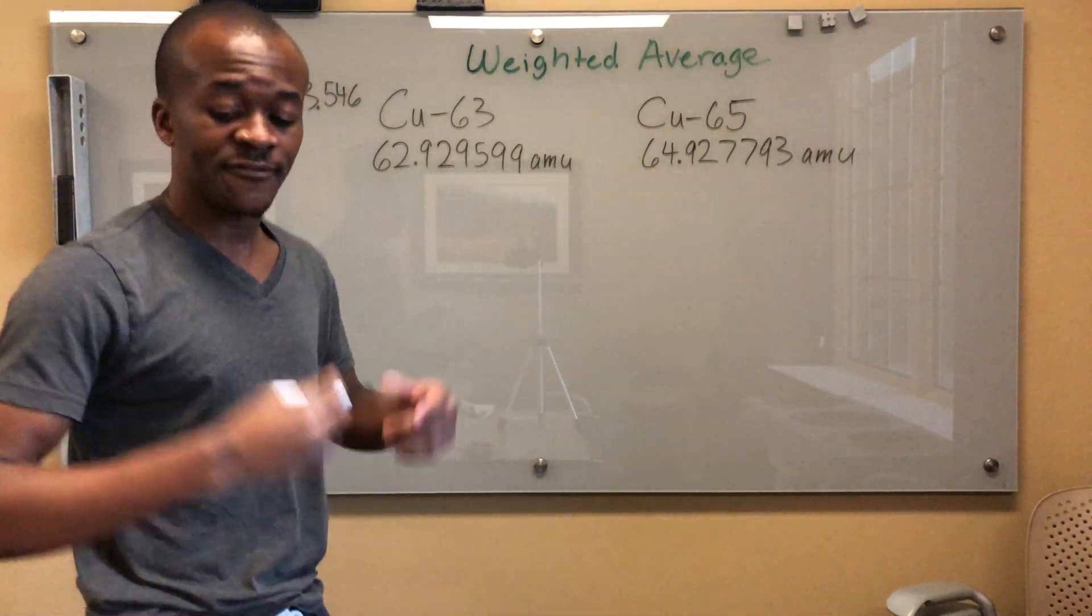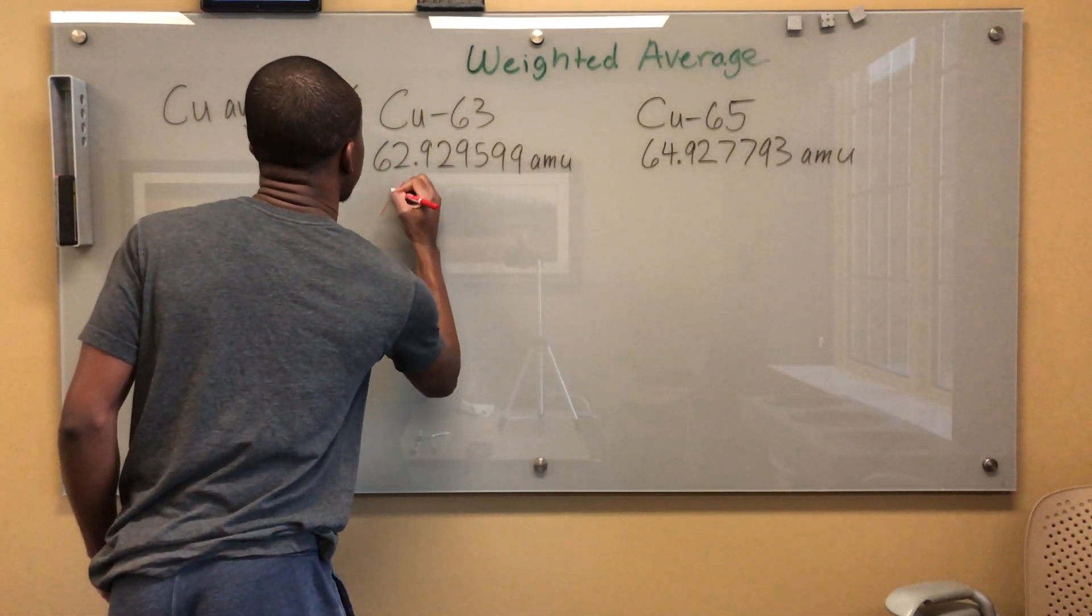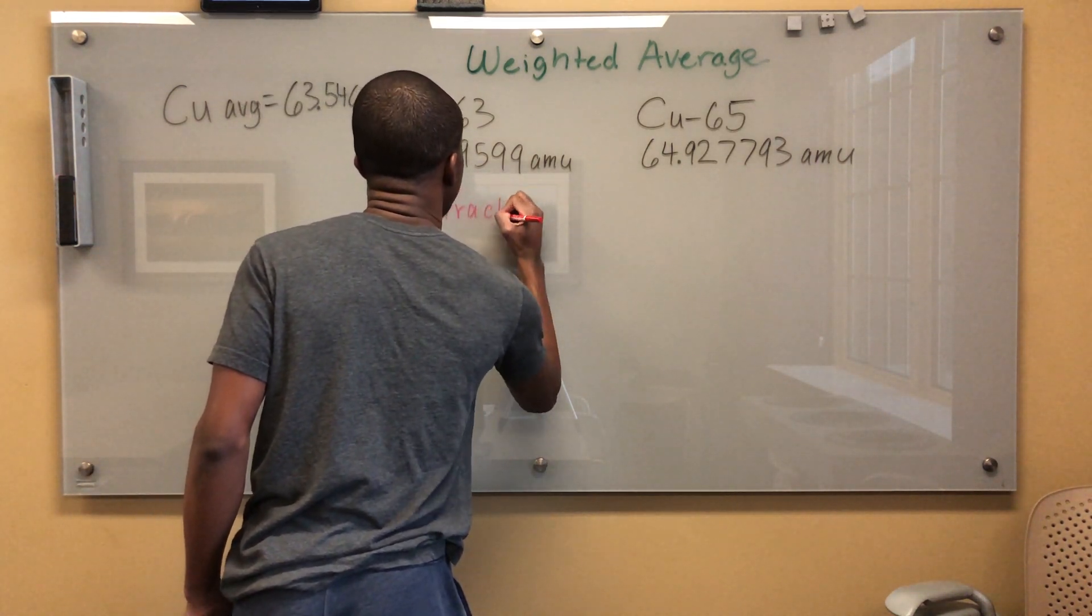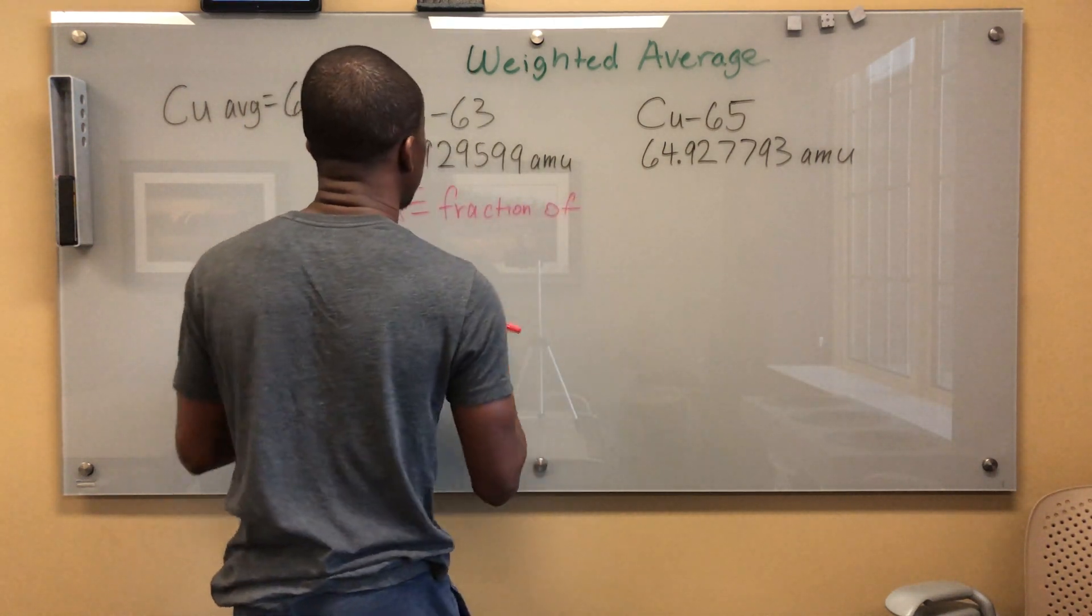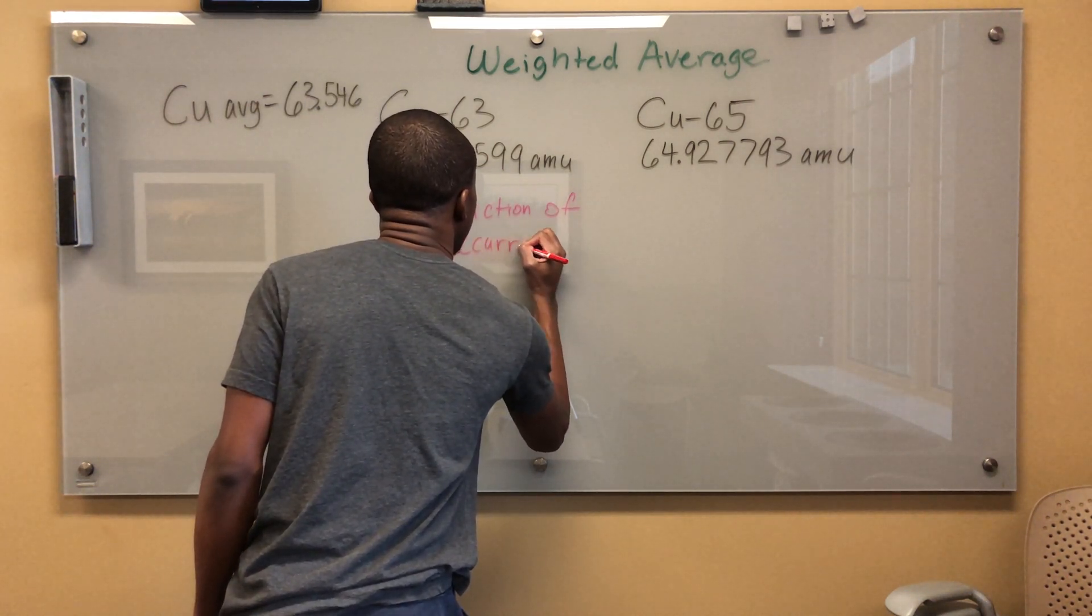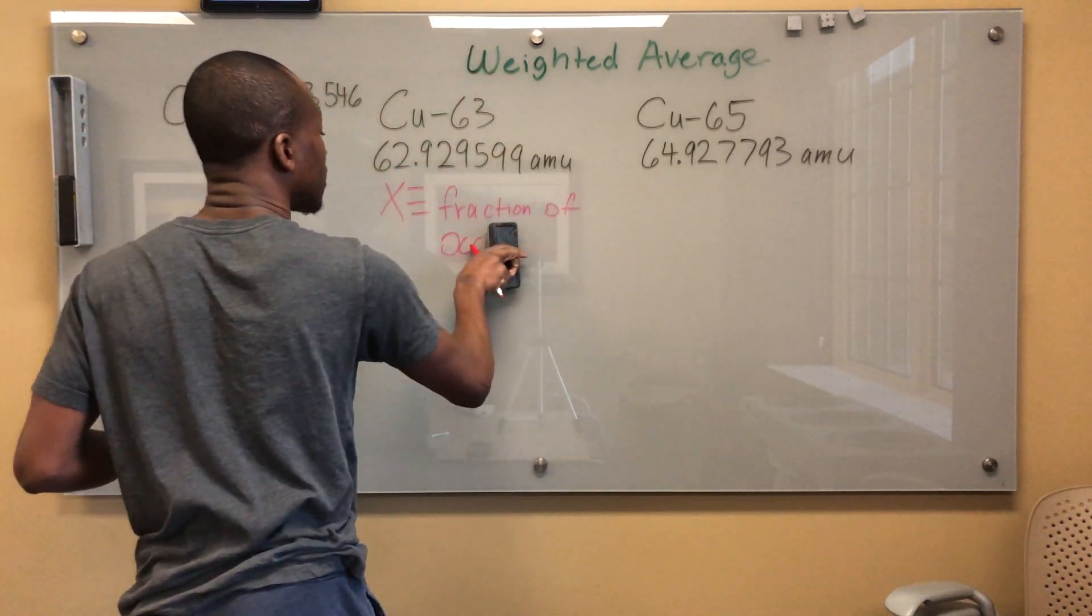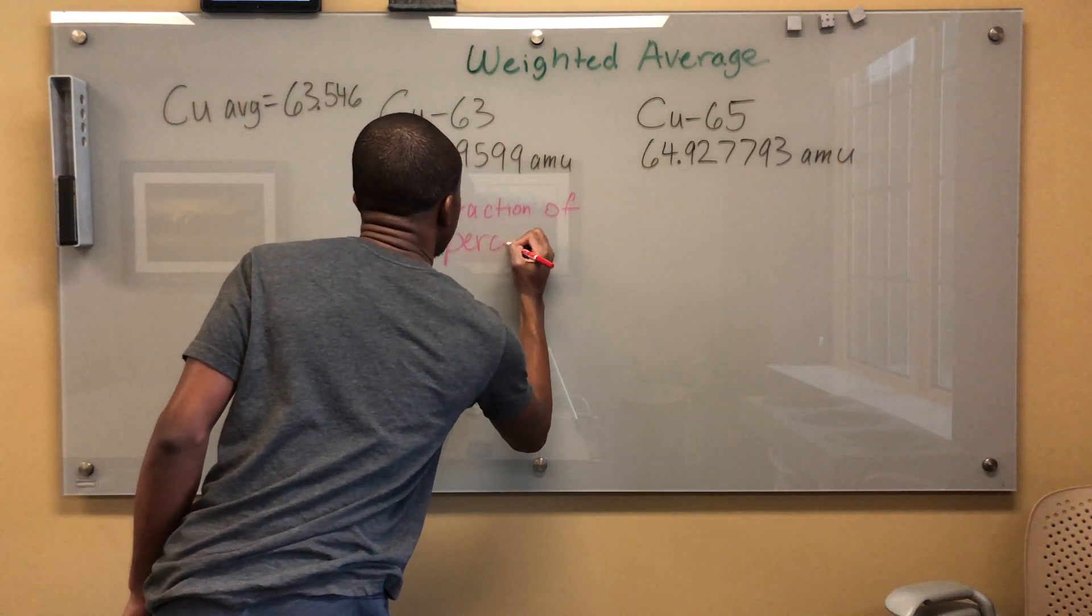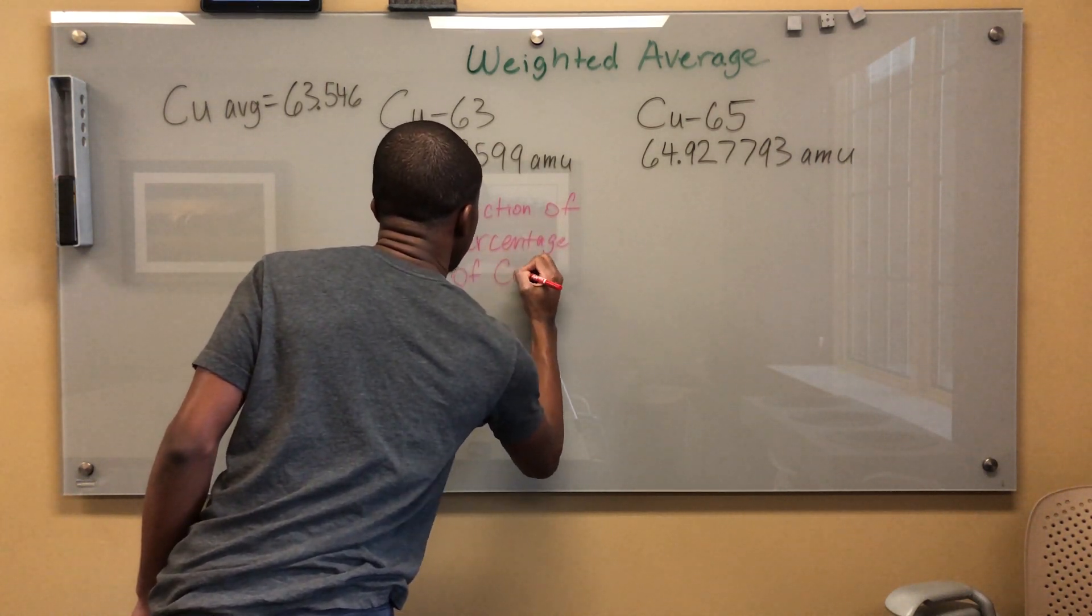So what am I going to do? First of all, I'm going to go ahead and name my variable. This is the fraction of percentage of my Cu-63. Fraction of percentage of Cu-63.